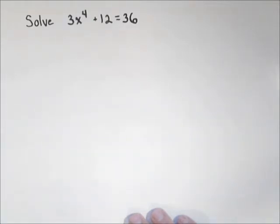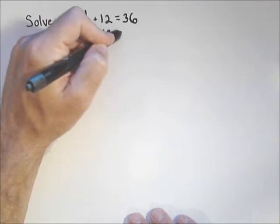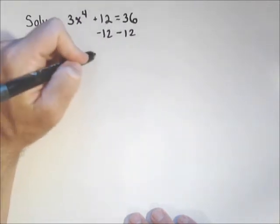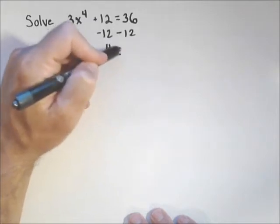We'll solve this like we would any regular equation. We'll start by subtracting 12 off of both sides and we get three x to the fourth equals 24.